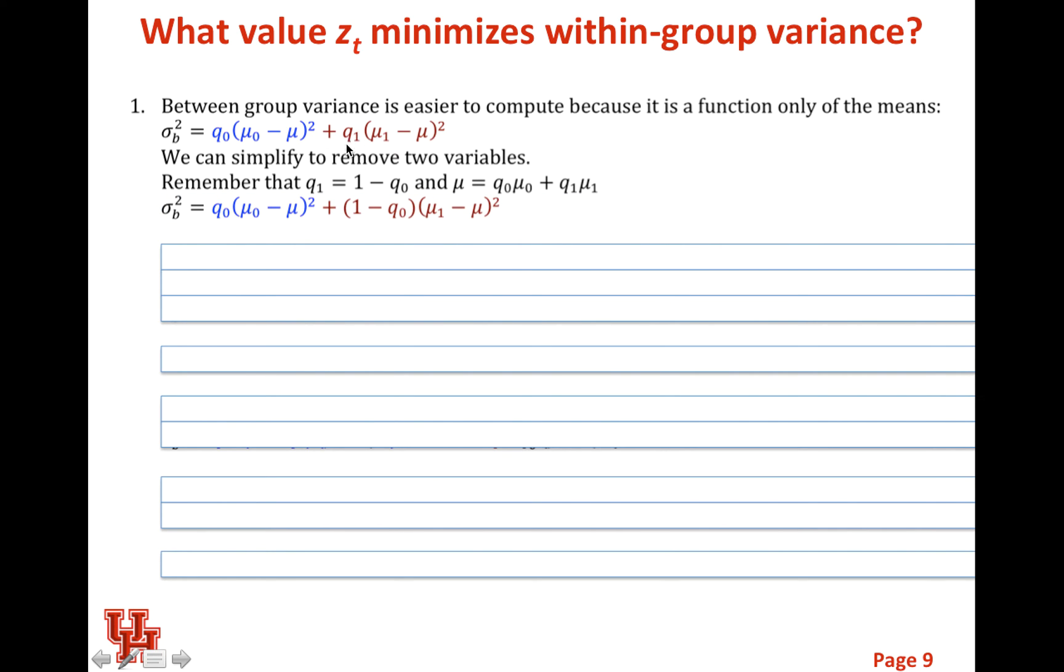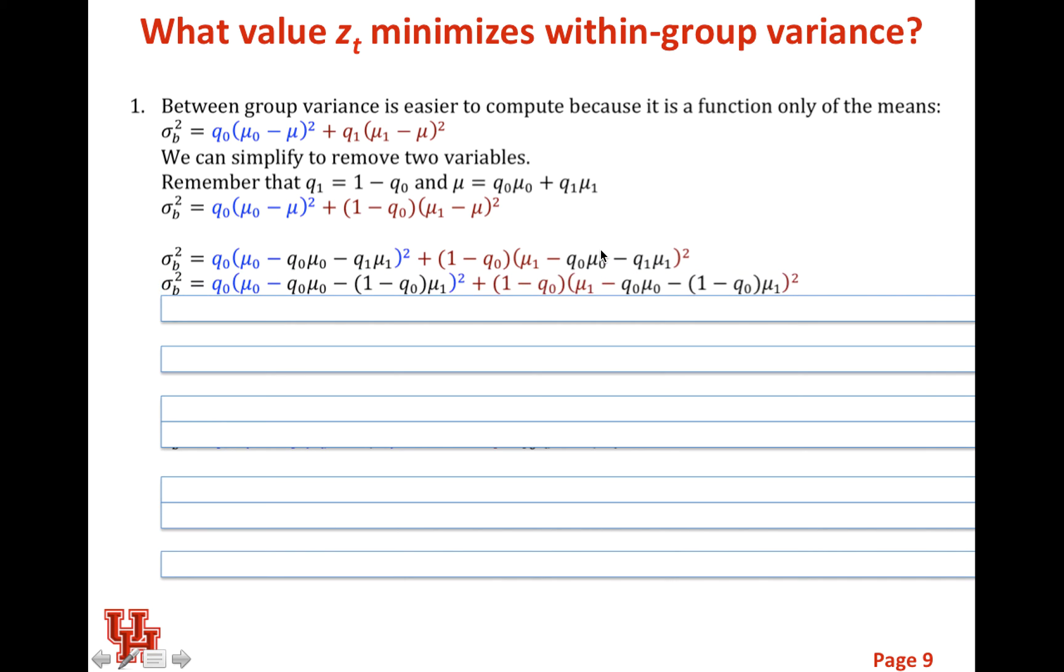We can now substitute these values in. The first thing I'll do here is I'll substitute from Q1. I want to have everything in terms of Q0, so I'm just going to replace that with 1 minus Q0. Next thing I'll do is I'm going to replace my μ values with my weighted average of my two means. So I've plugged that in in two different places here. Now I have to rearrange our terms. Before I do that, I'm going to replace all my Q1s, so I have no Q1s in there. It's all terms of Q0s. And now I have an expression that's only a function of Q0, μ0, and μ1.